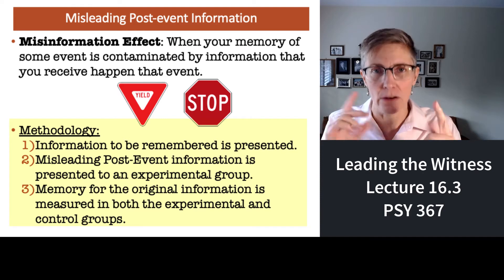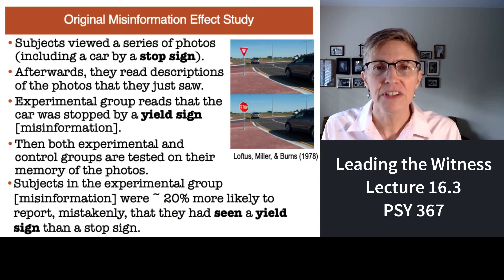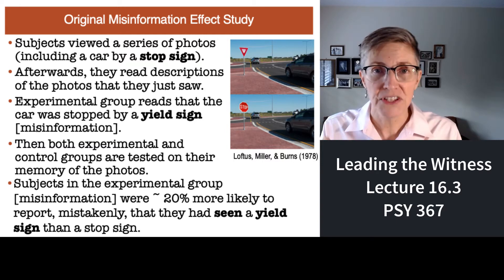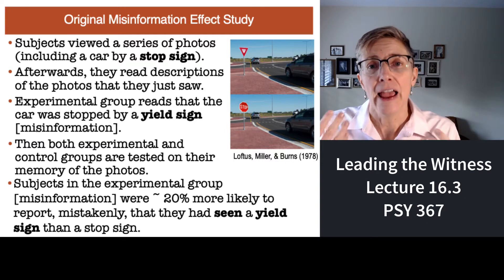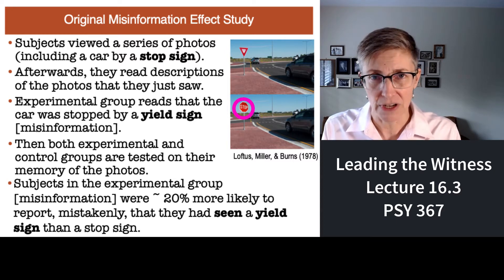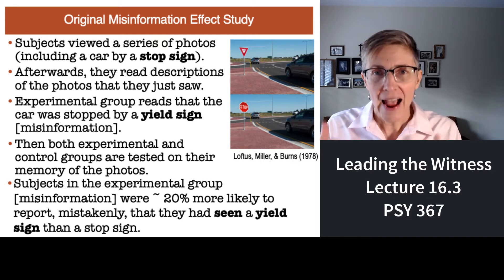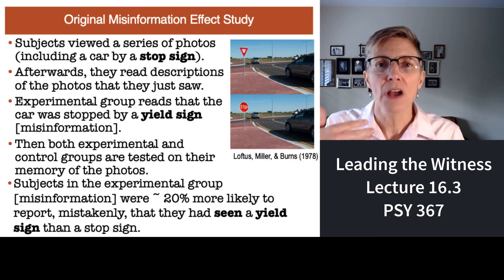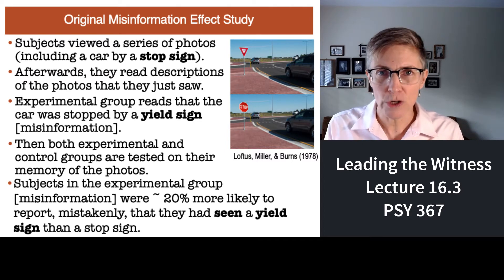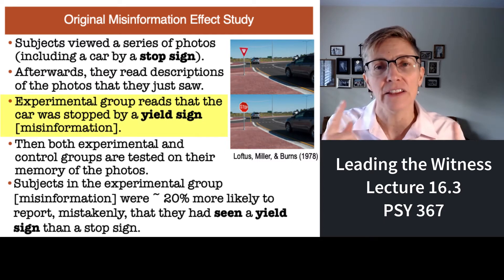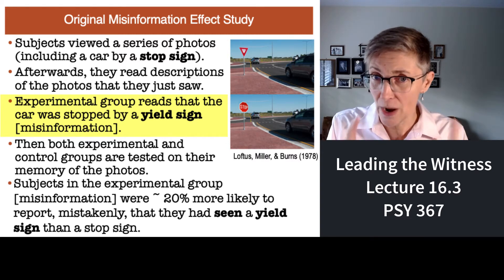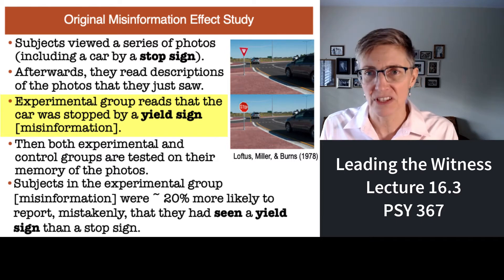Here is how the original misinformation effect worked. You see a series of photographs, and one of those photographs contains a picture of a car stopped by a stop sign. Afterwards, you read descriptions of the pictures — the photographs that you just saw — and in one of those descriptions it is said that the car stopped by a yield sign. Not a stop sign, which is what you actually saw, but the description says a yield sign.